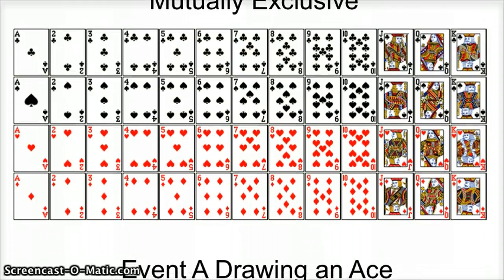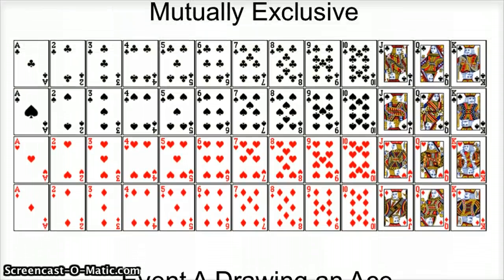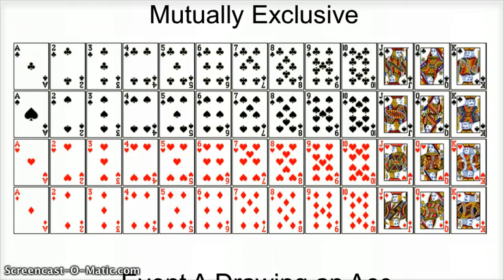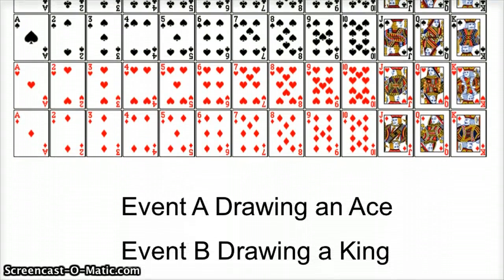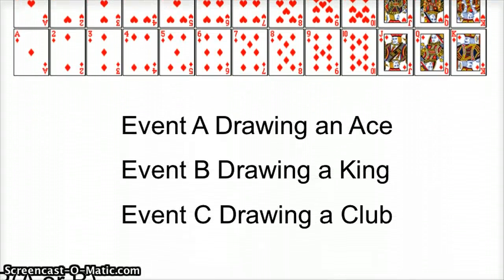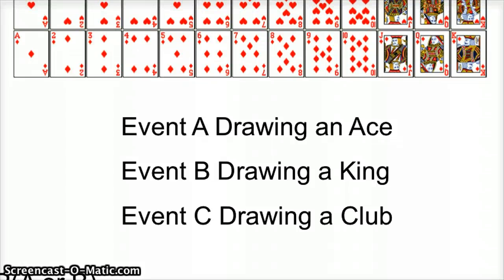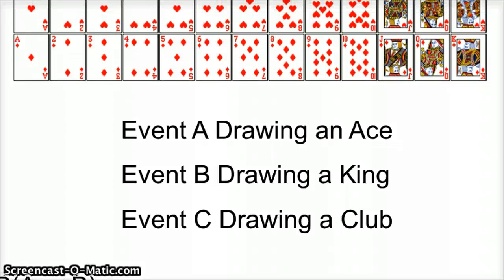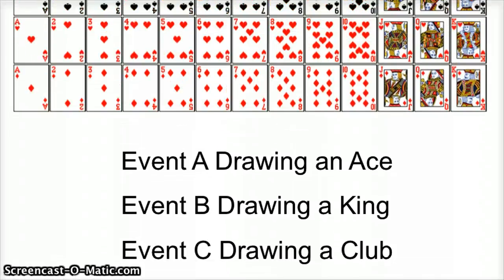So for those of you that are unfamiliar with cards, there's our sample space right here. So sample space for a deck of cards. So let's say we had three events. Event A is drawing an Ace, event B is drawing a King, and event C is drawing a Club.